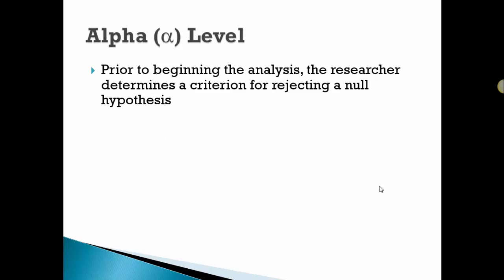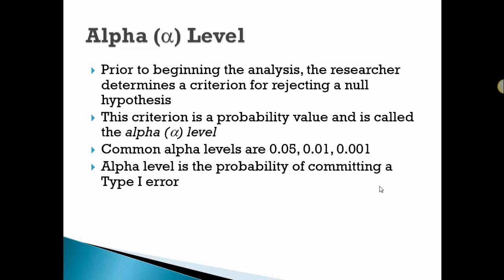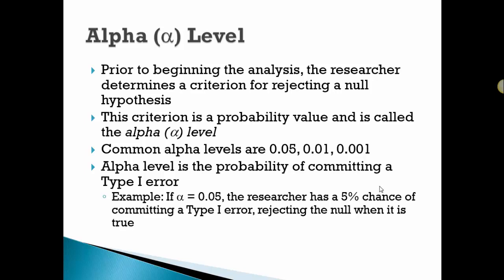The alpha level is what we determine as a criterion for rejecting a null hypothesis. It's a probability value called the alpha level. Common levels used are 0.01, 0.05, and 0.001. Alpha level is the probability of committing a Type I error, and the alpha level is actually a conditional probability. It's the probability of getting what we got given the null was true.